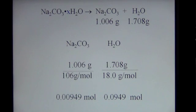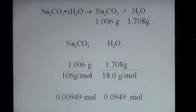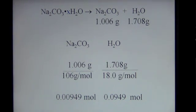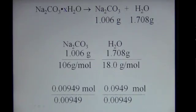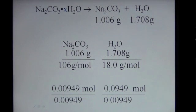We now have moles of sodium carbonate and moles of water — we're in the unit we need to compare the two. Now we just identify which of those two mole values is the smallest. That's obviously the sodium carbonate — it's smaller than the water value. So we're going to divide both the sodium carbonate and the water values by the smaller number of moles, dividing them both by 0.00949.